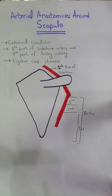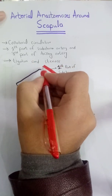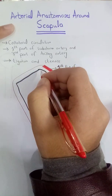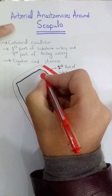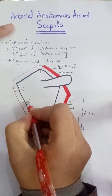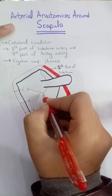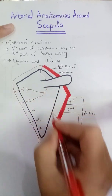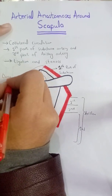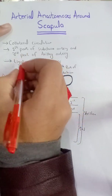Two branches of the first part of the subclavian artery are involved. The first branch is the dorsal scapular artery, and the second branch is the suprascapular artery. These both will anastomose. This branch was the dorsal scapular and this branch was the suprascapular.